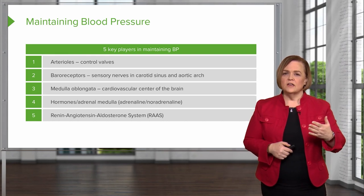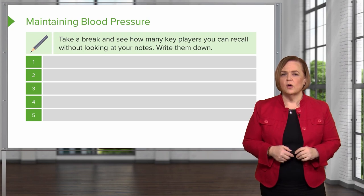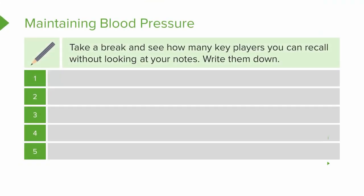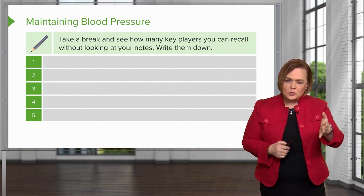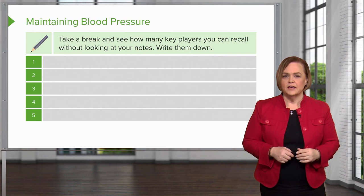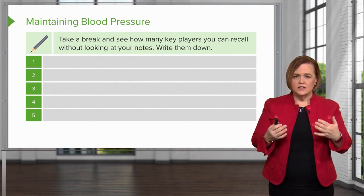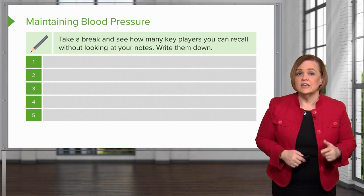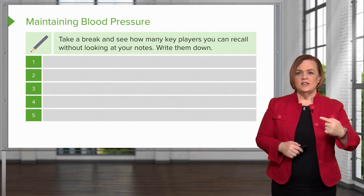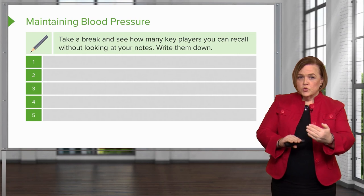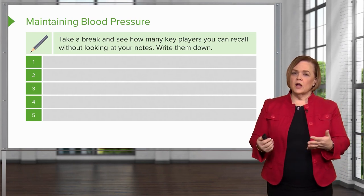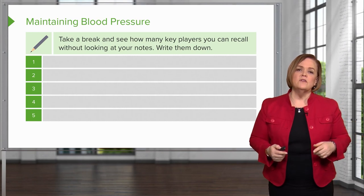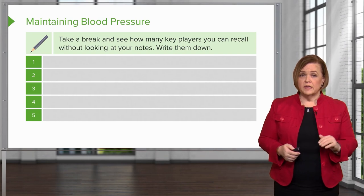I want you to pause the video and see how many of these five key players you can recall without looking at your notes — try to write them down. The mental energy you put into recall is a good way to encode that information into your brain. Information that's encoded successfully gets moved to your working memory and long-term memory, where it will be available when you need it. So even if you can't remember all of them, the more effort you apply into remembering as we go along, the better your results will be in the long run.